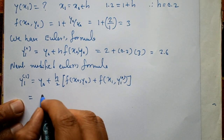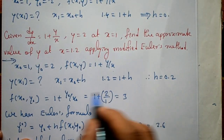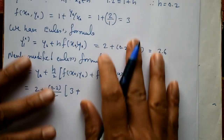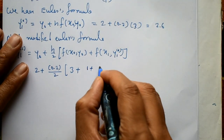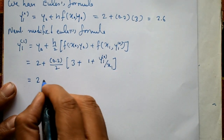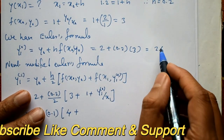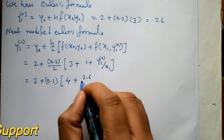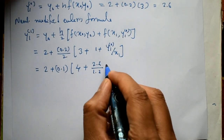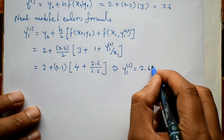Substituting: y0 is 2, plus h divided by 2 is 0.2 by 2, into f of x0, y0 which is 3, plus f of x1, y1⁰ which is 1 plus y1⁰ by x1. Using y1⁰ equal to 2.6 divided by x1 equal to 1.2, the result is y1¹ equal to 2.6167.